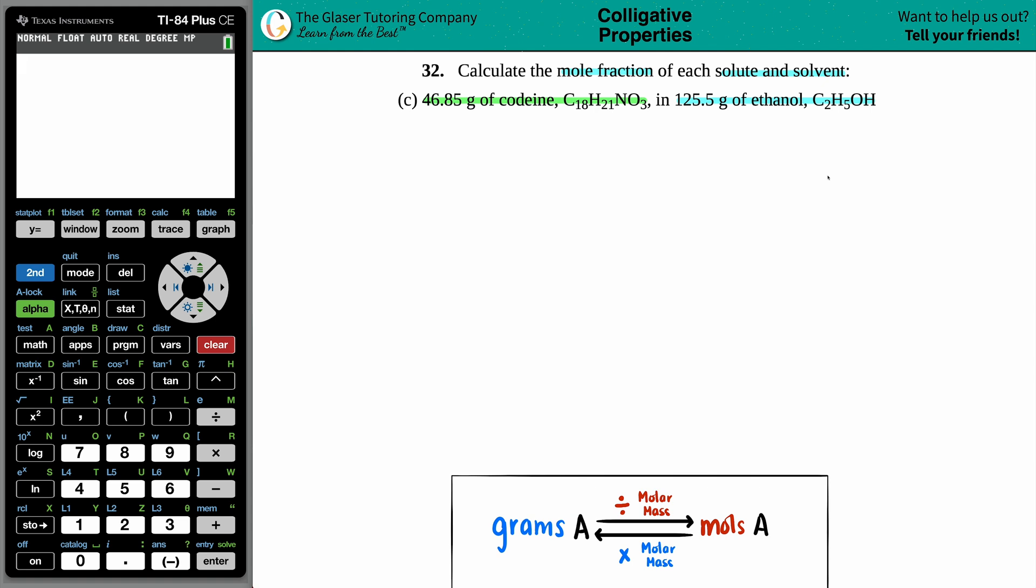Do not try this at home, this is just for theory. Never mix codeine with ethanol, which is drinking alcohol. Here we're just going to do the math, so do not try this at home. We have to find the mole fraction of both the solute and the solvent.